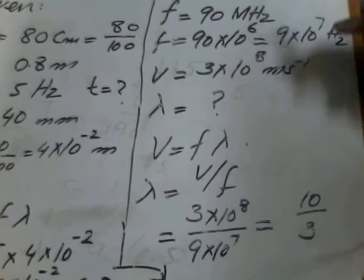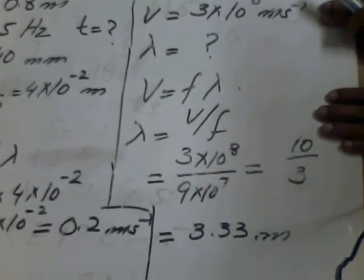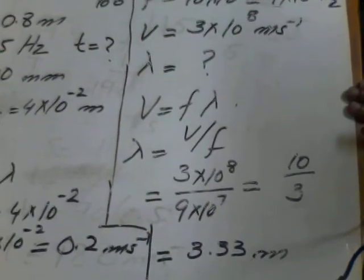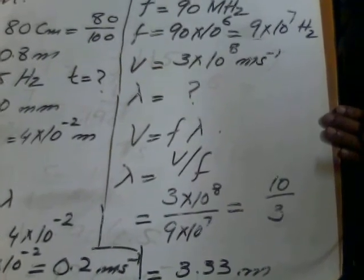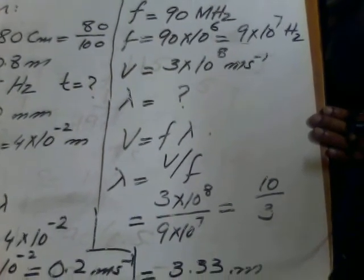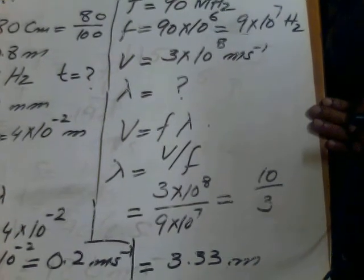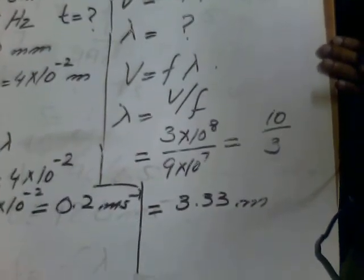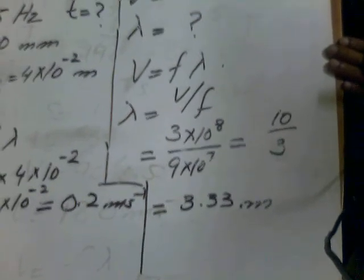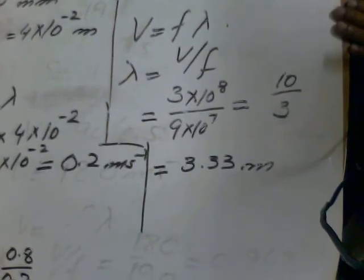V is 3 into 10 raised to power 8 divided by 9 into 10 raised to power 7. After simplifying, we found it 10 divided by 3, it has come 3.33 meters.